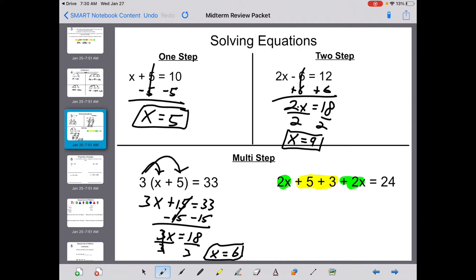On the right-hand side, 2x plus 2x makes 4x, and 5 plus 3 makes 8, which equals 24. Minus 8 on both sides. 4x equals 16. Divide by 4 on both sides. 4s cancel, and x equals 4.